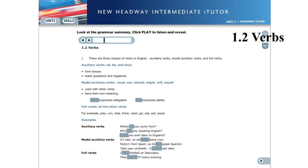We use these verbs to form tenses and to make questions and negatives. Modal auxiliary verbs, for example: must, can, should, might, will, and would. We use modal auxiliary verbs with other verbs, and they have their own meanings. For example, must expresses obligation. Can expresses ability.